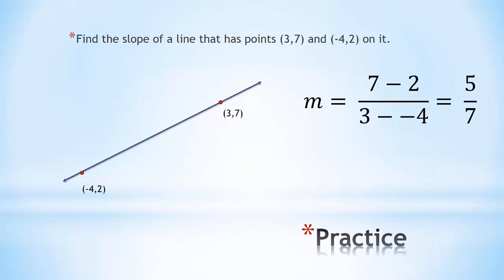I'm going to reverse this and start with (-4,2) as my first point. In this case, I would go 2 minus 7 as my y values and -4 minus 3 as my x values. I end up with -5 over -7, but it still simplifies to be 5/7.